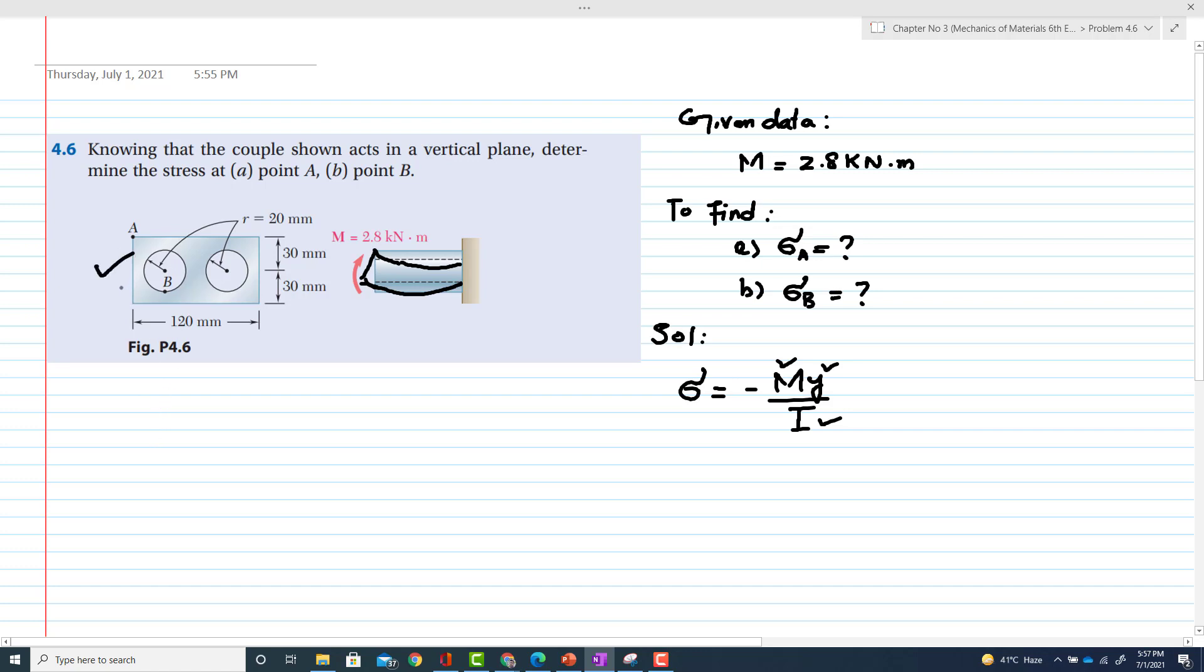Let's start finding the moment of inertia for this cross section. This is a rectangular cross section having width 120 mm and total height 60 mm. If you pass the centroid from the center, this is your neutral axis or centroidal axis. You have to find the stress at point A, so this is your YA.